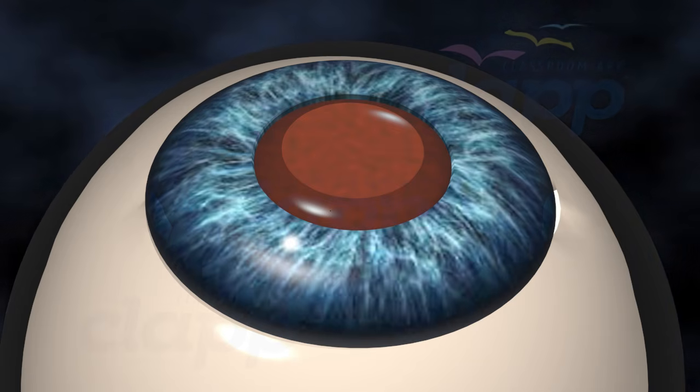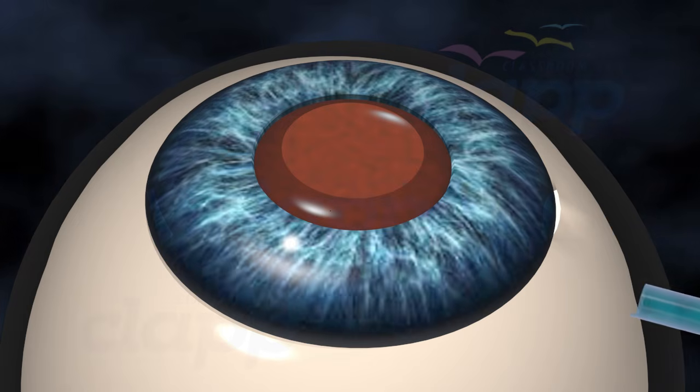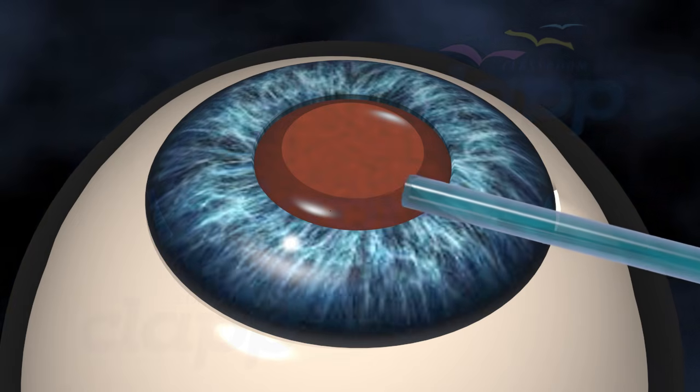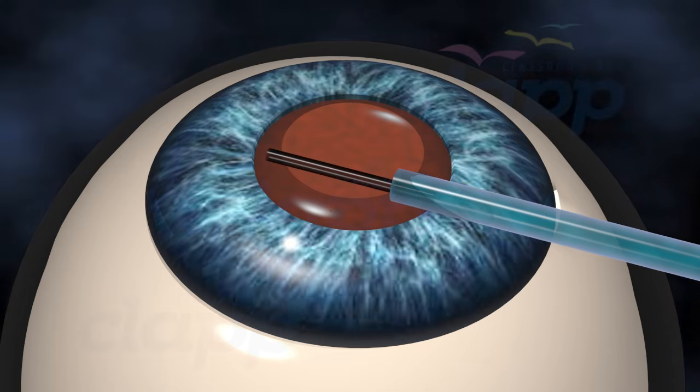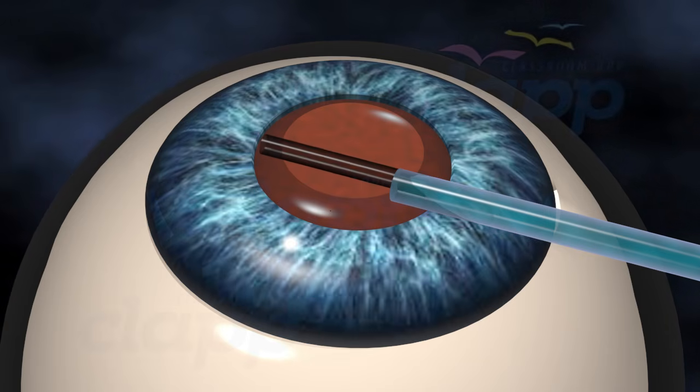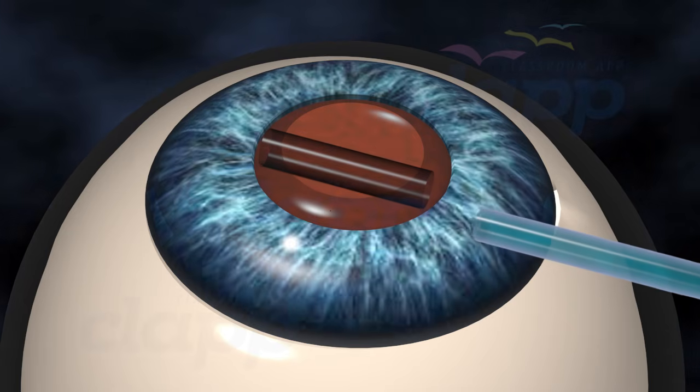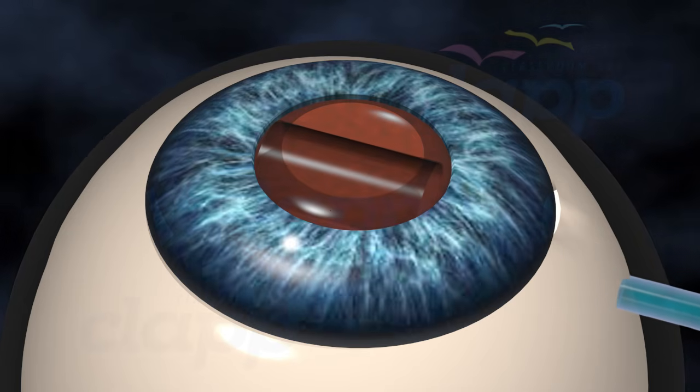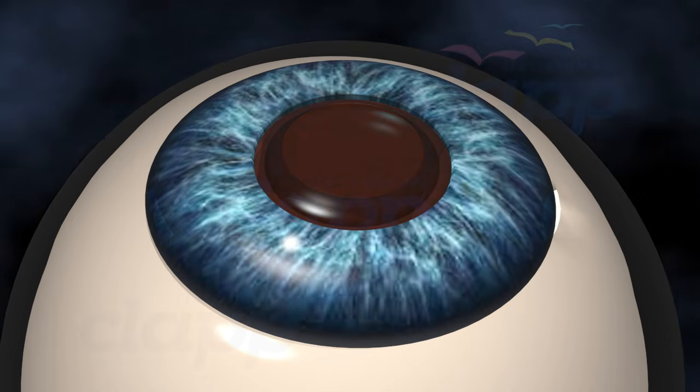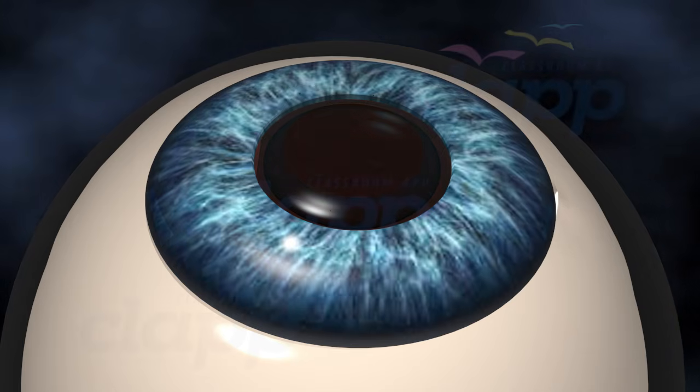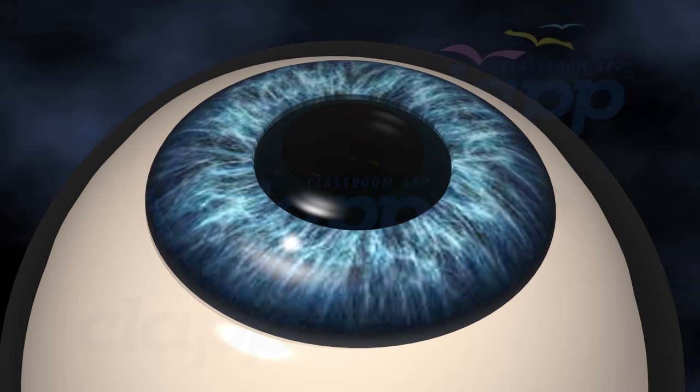After the cataract is removed, your surgeon will insert a clear artificial lens called an intraocular lens, or IOL, with an injector. The intraocular lens will unfold gently into the capsular bag. This implanted intraocular lens is fixated and centered in the eye, and the incision is self-sealing.